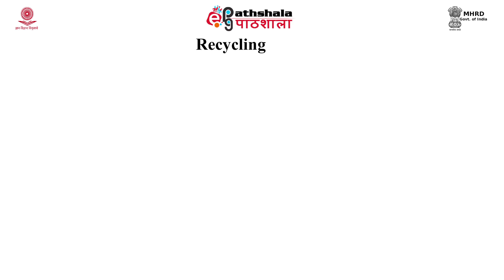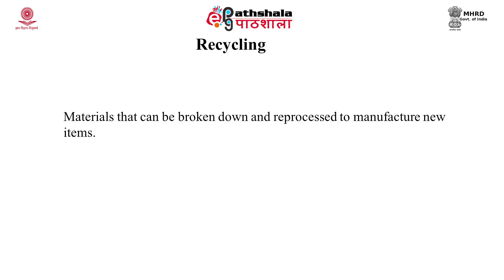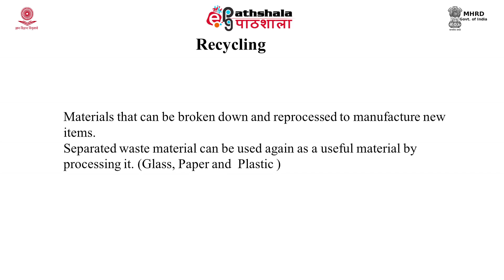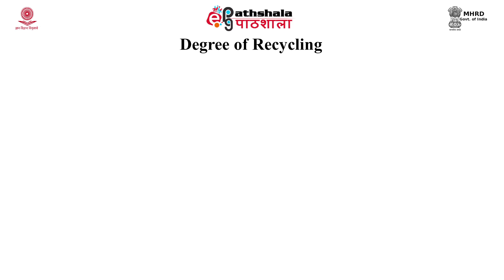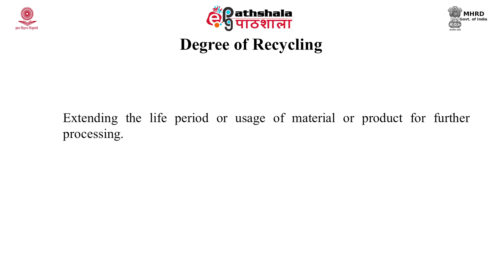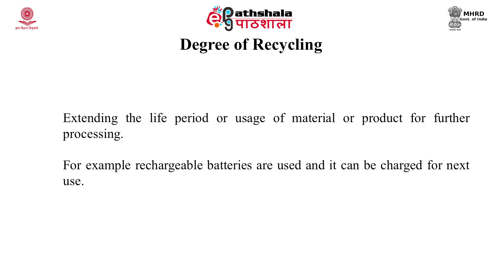Recycling involves breaking down or reprocessing materials to manufacture new items. Materials such as glass, paper, and plastic can be separated and converted into useful material by processing. Instead of plastic covers, start using shopping bags made of cloth or jute. The degree of recycling is also important — you should know the extent or life period of the material before processing it further. For example, rechargeable batteries can be charged and reused again and again.